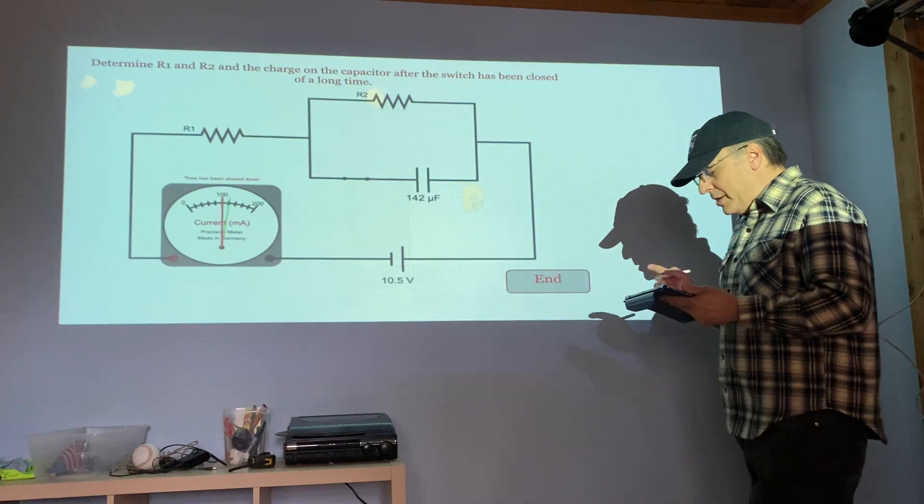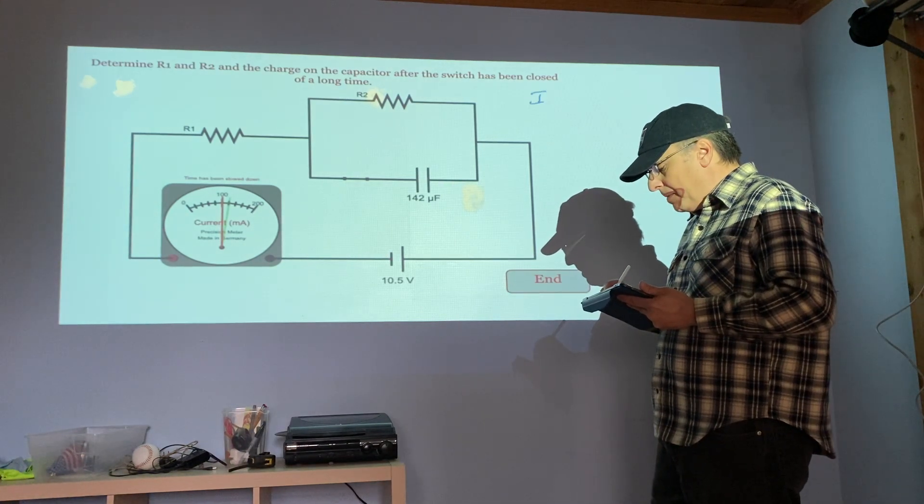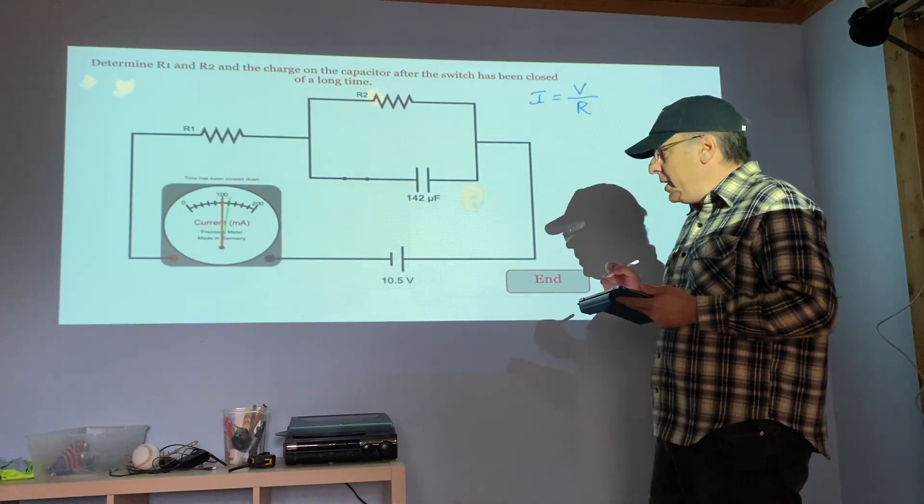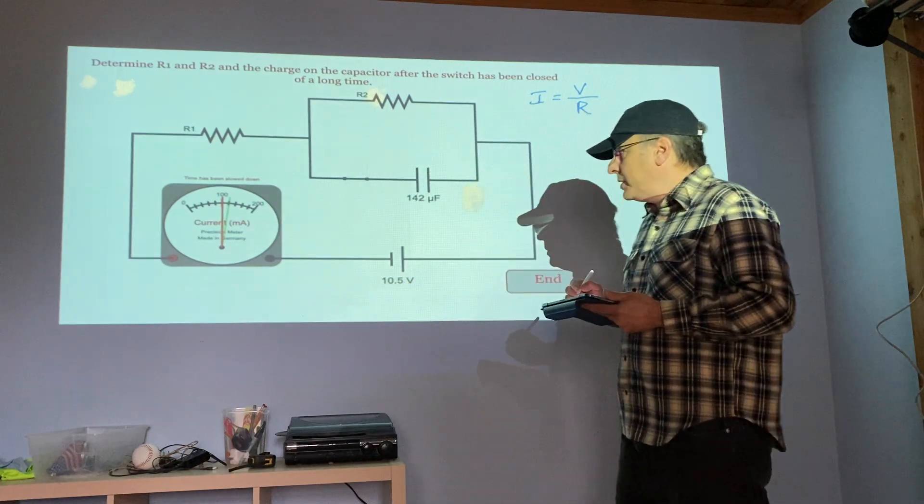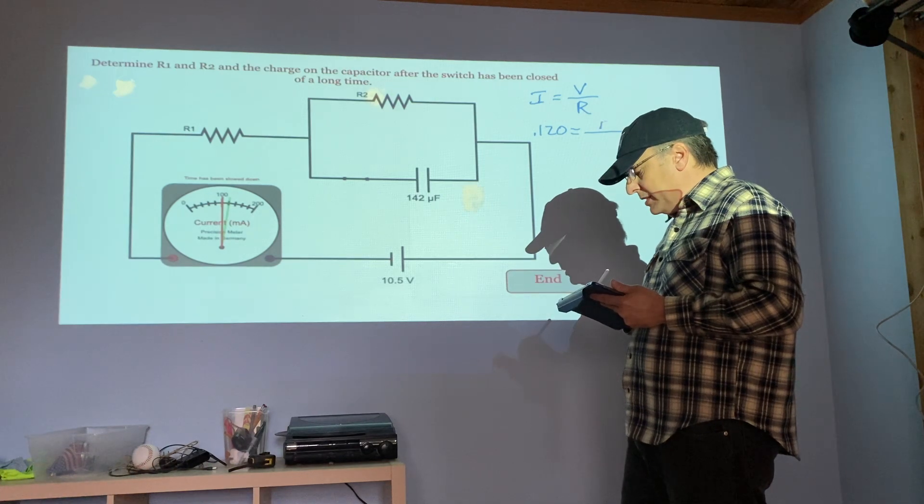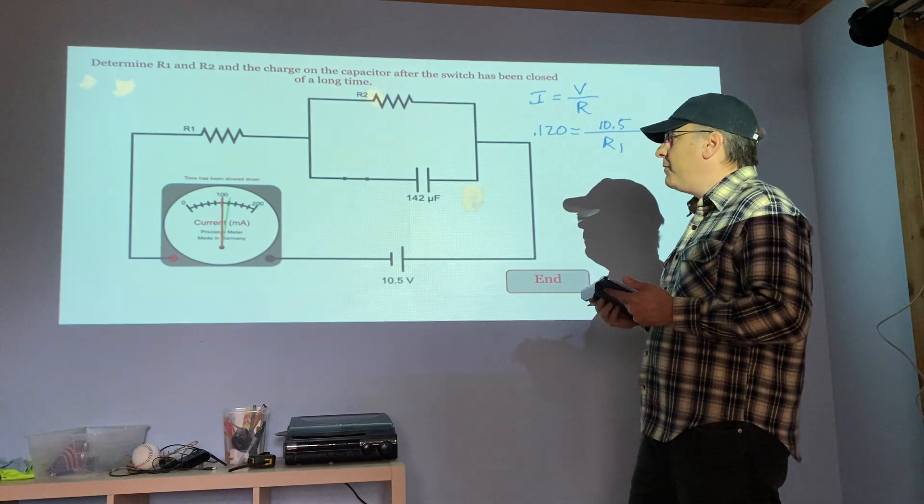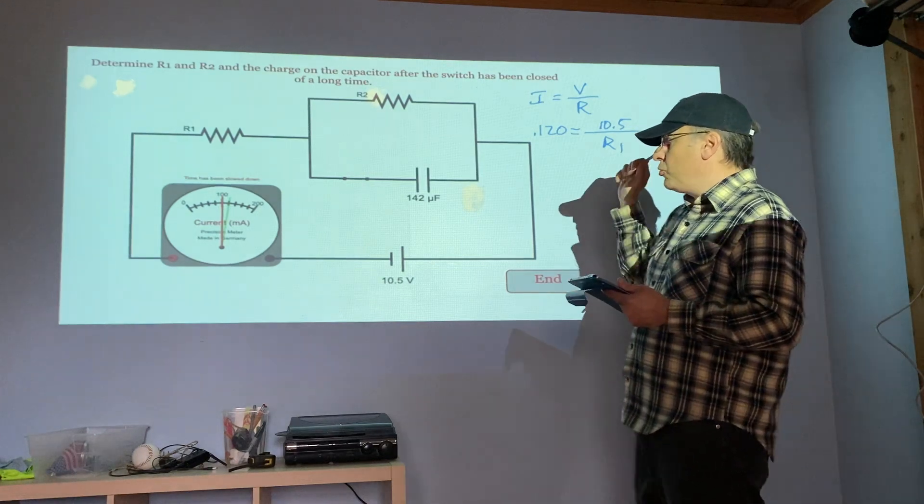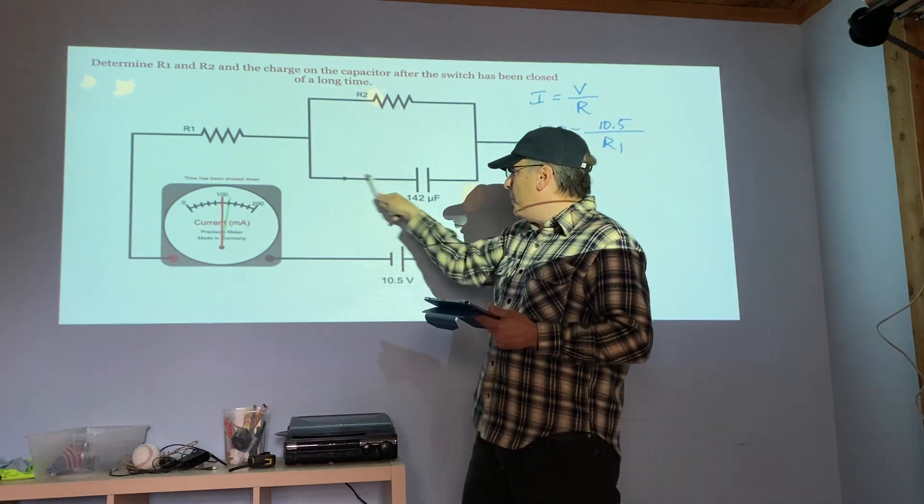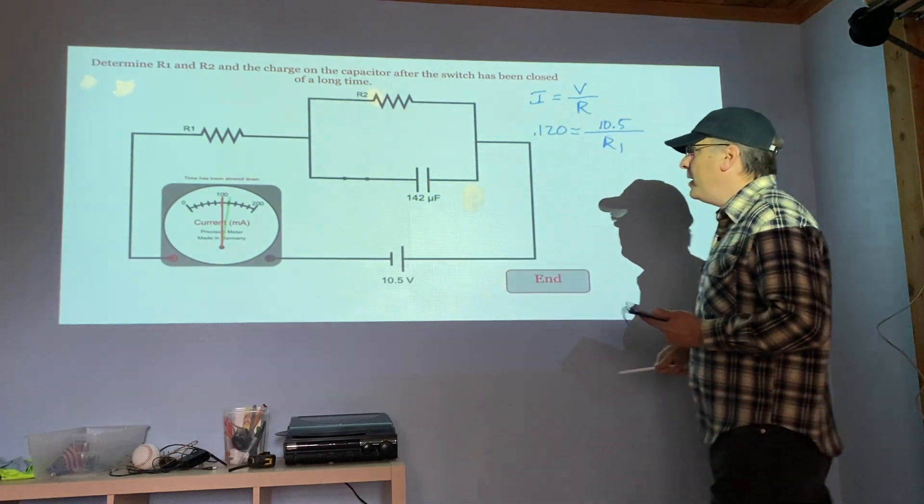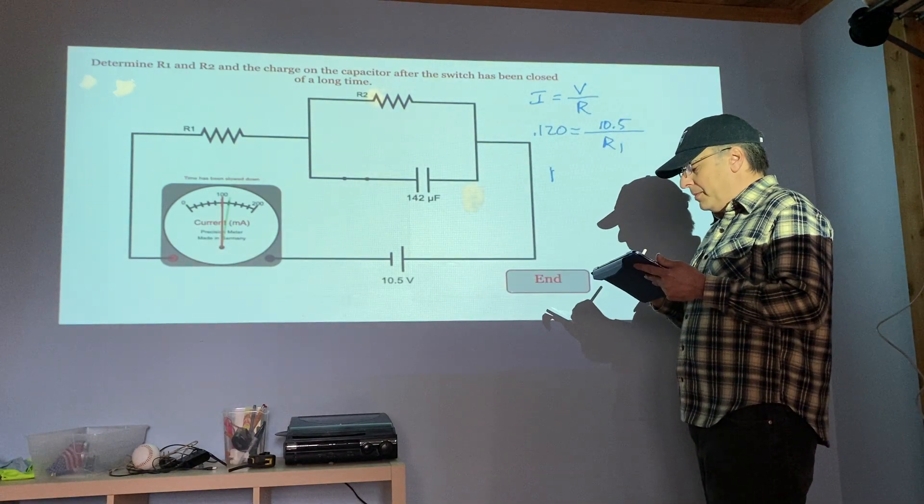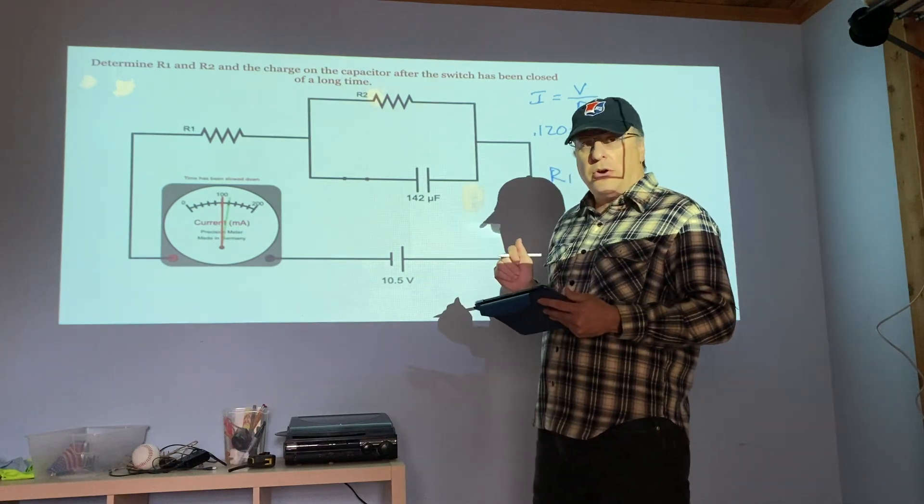To figure out our R1, we do I equals V over R just like we did yesterday. We use the maximum current which in this case looks like it's 120, our voltage is 10.5, and we solve for R1. This green line represents when I first threw the switch and this was acting like a wire, shorting out this top one, and that allows us to get R1. Once we have R1 we go back and we find R2.